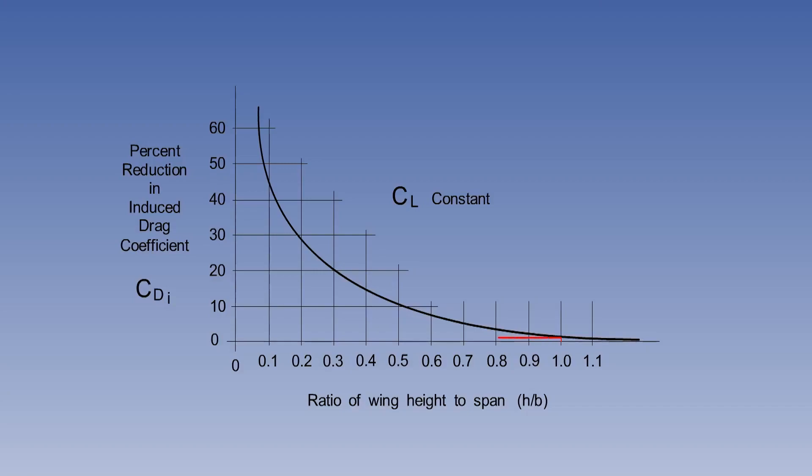The reduction in CDI is only about 1.5% at a height of 40 meters, that is, with a height-span ratio of 1. As the height comes down to 10 meters, a ratio of 0.25, the CDI has dropped by 23.5%.